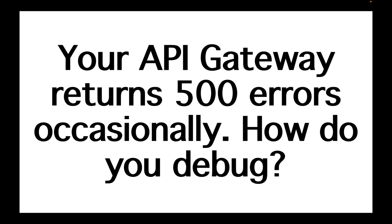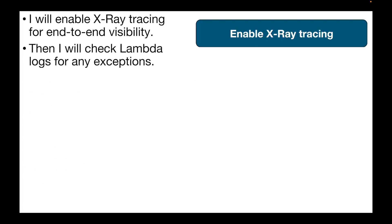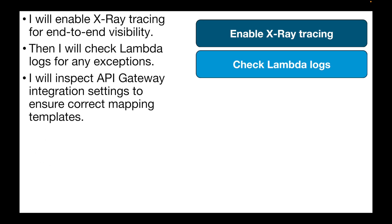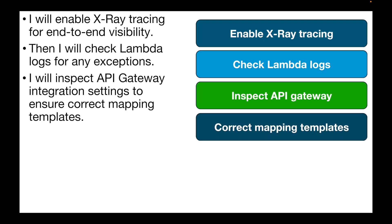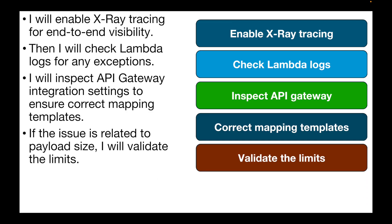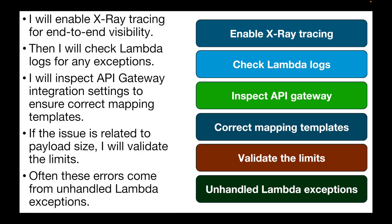The next question is: your API Gateway returns 500 errors occasionally. How do you debug this? Enable X-Ray tracing for end-to-end visibility, then check CloudWatch Lambda logs for any exceptions. Inspect the API Gateway integration settings to ensure templates are correctly mapped. If the issue is related to payload size, validate the limits you have set. Often, these errors come from unhandled Lambda exceptions within the code itself.